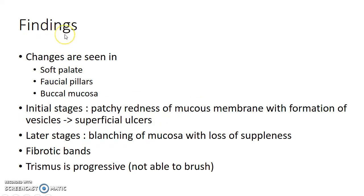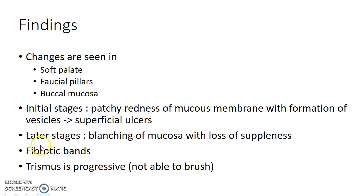What are the findings in a patient with oral submucous fibrosis? The changes are seen in soft palate, fascial pillars, and buccal mucosa. In the initial stages, patchy redness of mucous membrane with formation of vesicles can be seen, which later on leads to superficial ulcers. In the later stages, blanching of mucosa can be seen with loss of suppleness. Fibrotic bands can also be seen. The trismus is progressive — at one point, the patient will not be able to brush his teeth or put his hand in his mouth.